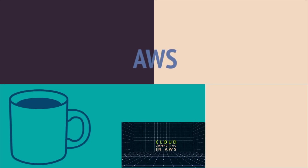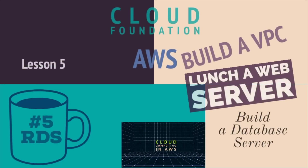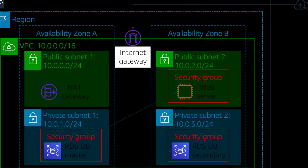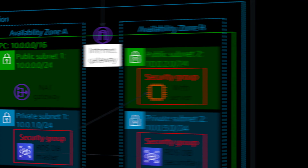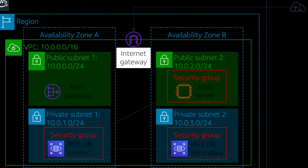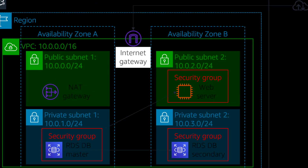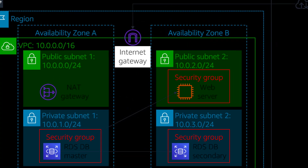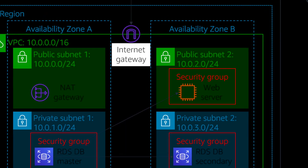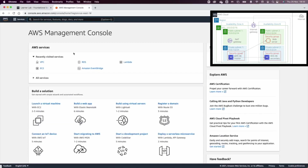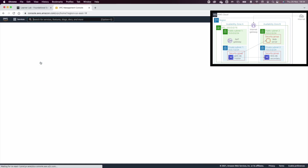Welcome to another video on cloud computing in AWS. Today we are going to look at an extra lab activity. In this lab we are going to create a VPC, build and launch a web server, and then launch an RDS. So let us go now and create a VPC.